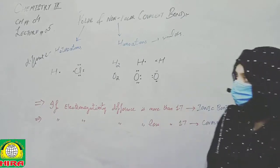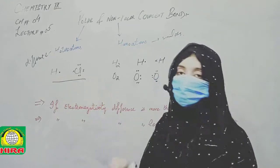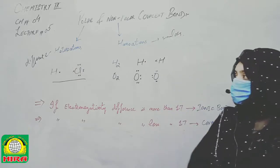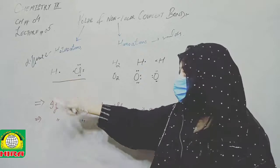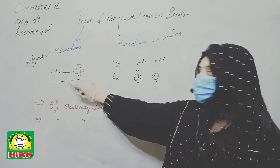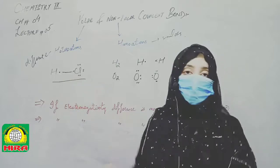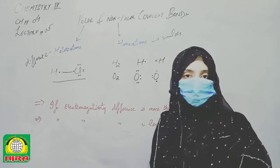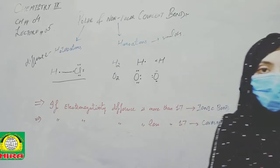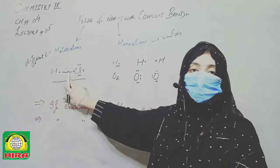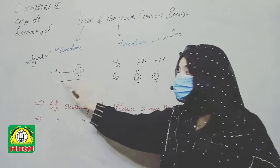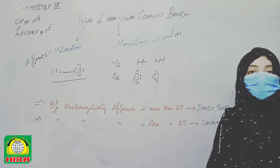In the HCl example, chlorine comes from Group 7 — the halogens — and has seven electrons, while hydrogen comes from Group 1. These two atoms undergo mutual sharing because chlorine needs eight electrons to satisfy the octet rule, and hydrogen needs two electrons to satisfy the duplet rule. The bond formed between these different atoms is called a polar covalent bond.